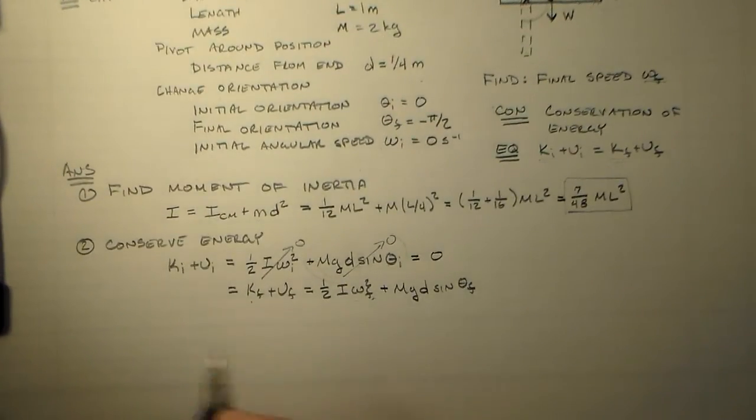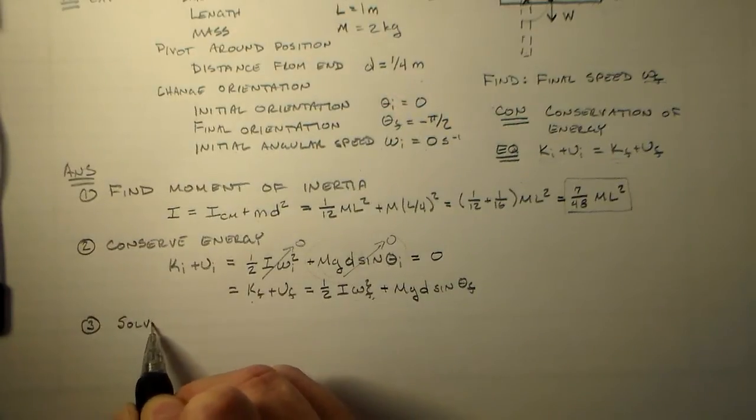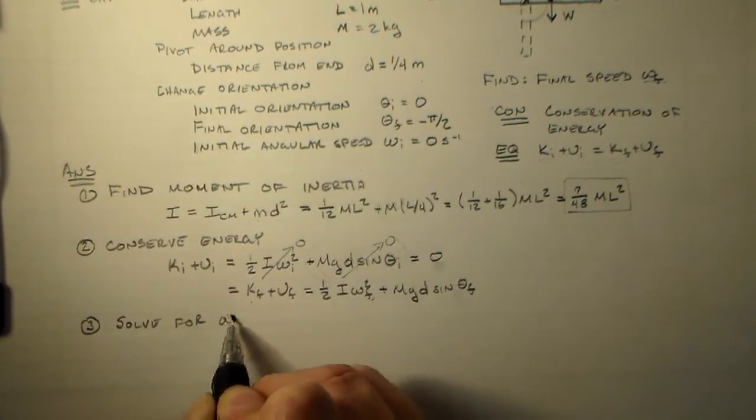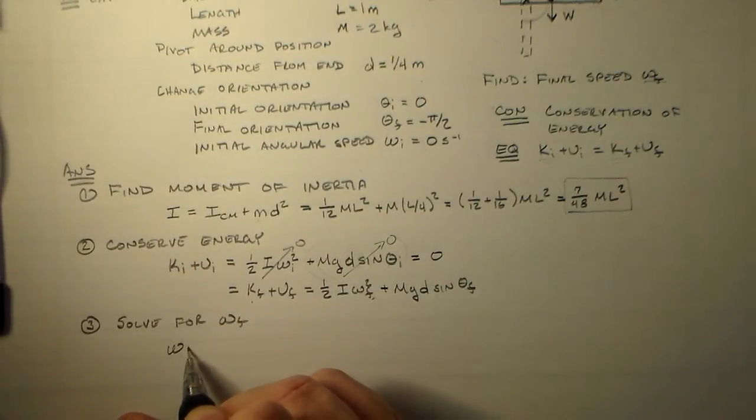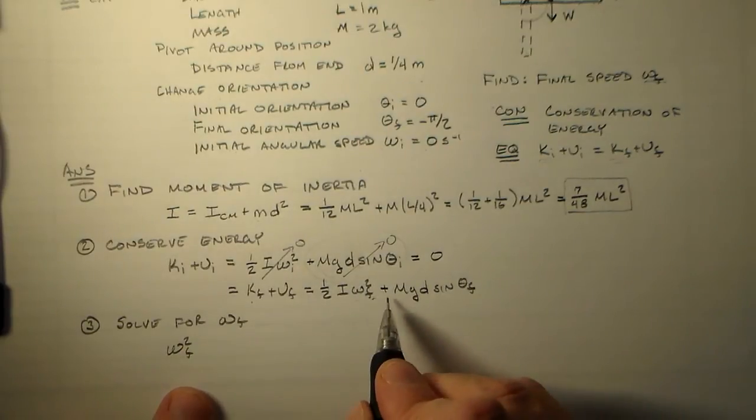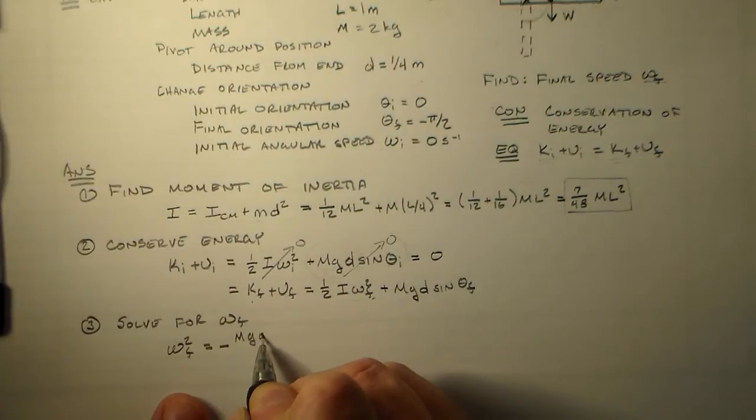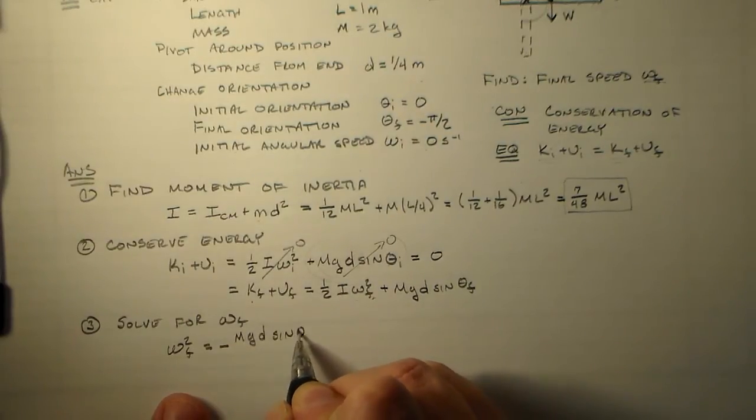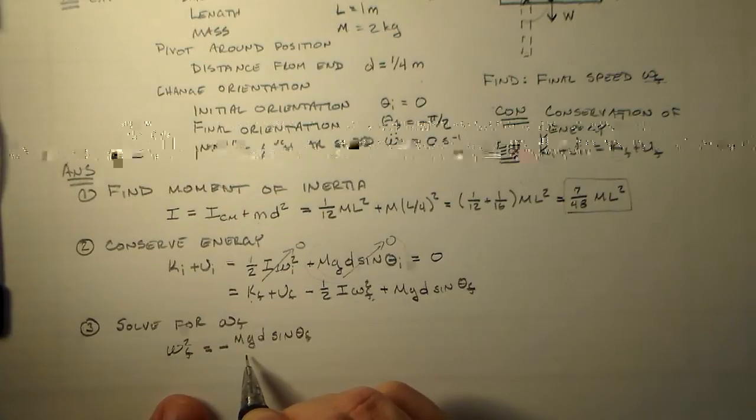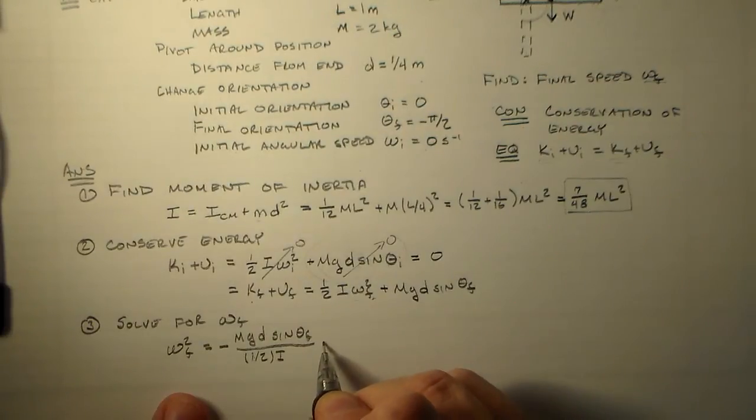Omega_f squared equals negative MGd sine theta_f over one half I.